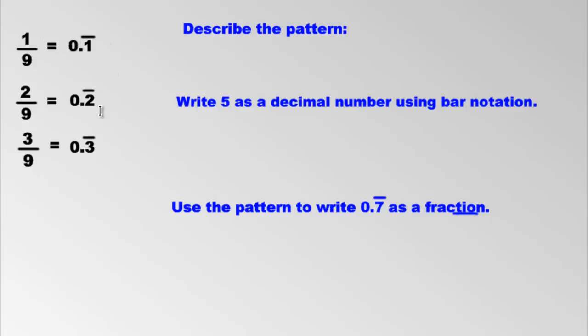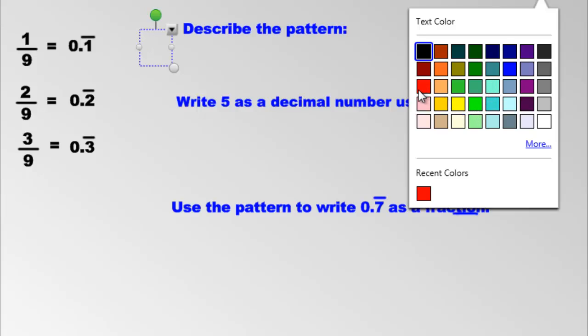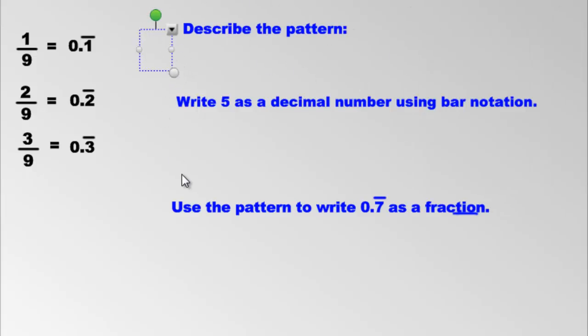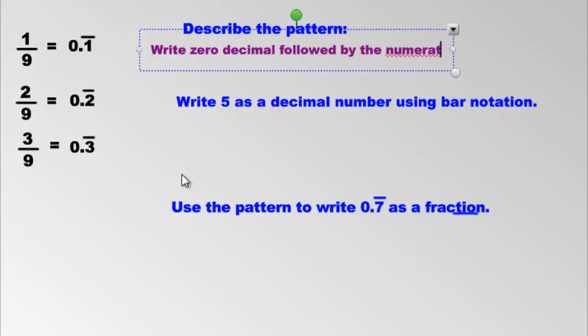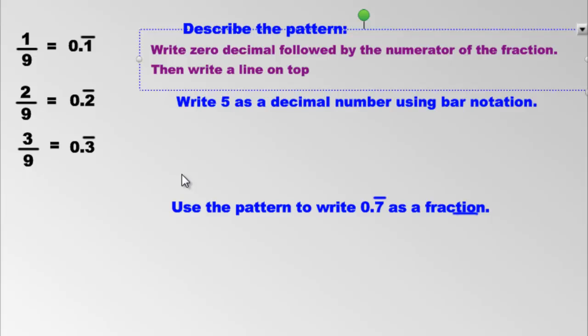All you gotta do is take that numerator and repeat it. Write zero decimal and then the numerator repeated, that's it. Now how do we write that out? Let's pick what color do you want, feeling like red again. I heard somebody say blue, no blue matches there, let's do purple. So we can write: write zero decimal followed by the numerator of the fraction, then write a line on top of that digit. How does that sound? Is that what's happening? We write zero decimal and then we take the numerator and we write a line on top of it, that's it.